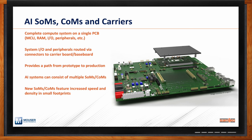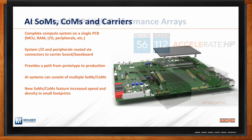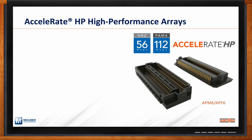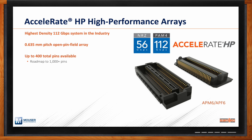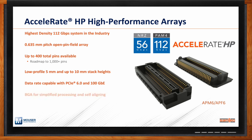C-Ray is a great solution for embedded SOMs and COMs, but we've come out with a new product called our Accelerate HP — High Performance Array. It's an open pin field array similar to C-Ray but takes us to 112 gigabit performance. It has a dense 0.635-millimeter pitch between pins along the row, with additional space between rows to allow differential signaling routed in both north-south and east-west directions. It currently supports up to 400 pins with roadmap up to 1,000 for AI applications, supports PCI-6 and 100 gigabit Ethernet, uses a BGA attach process, and is cost-optimized.